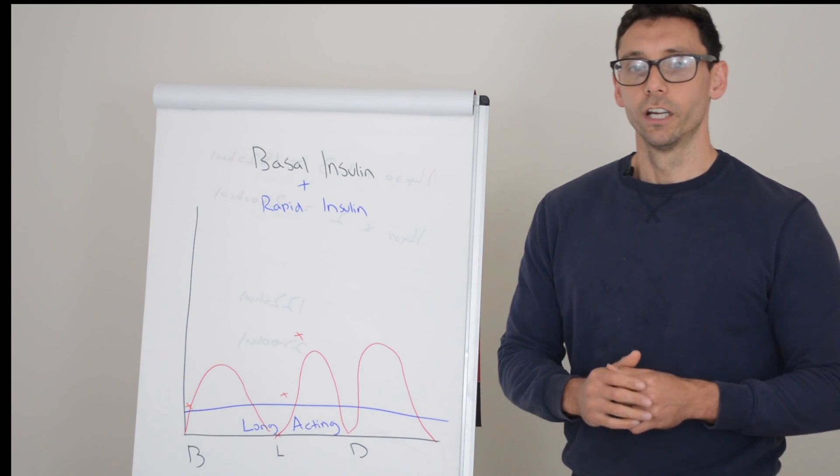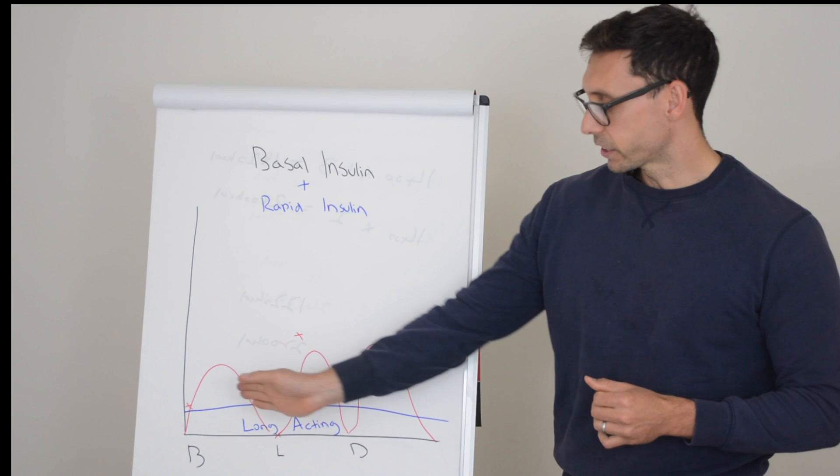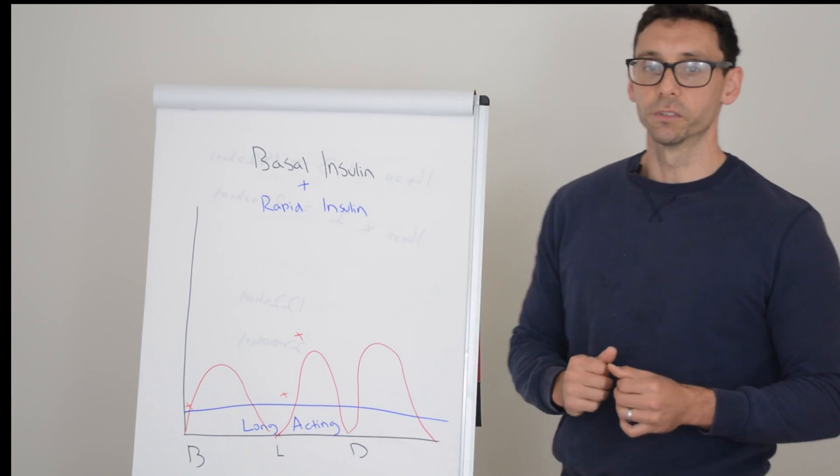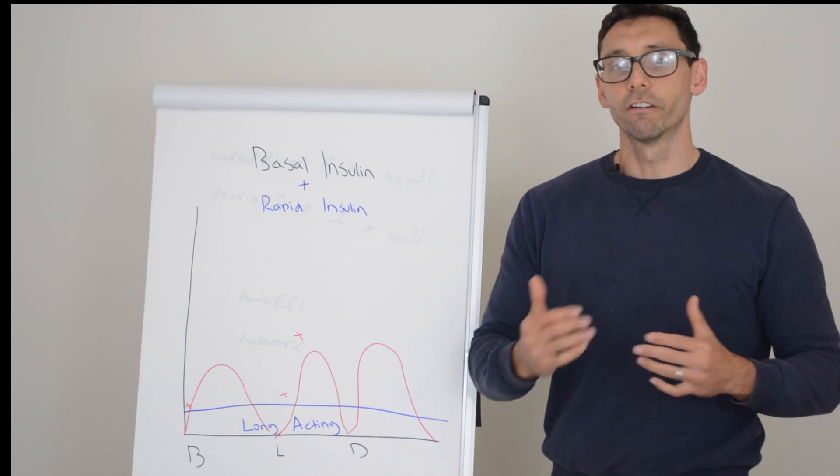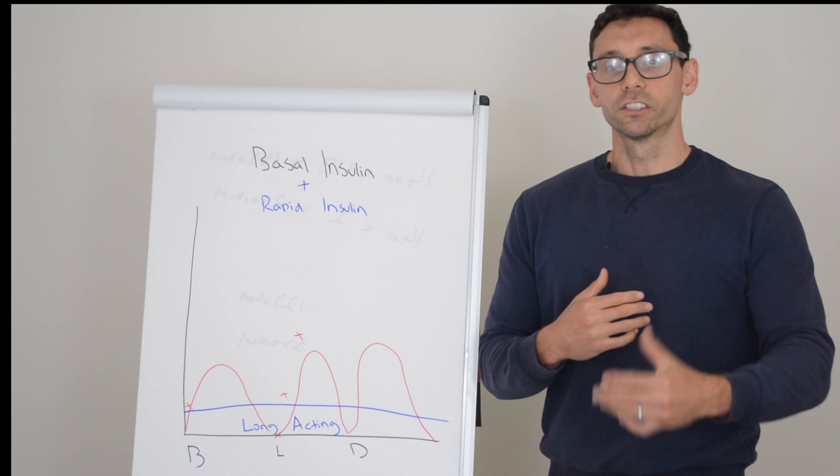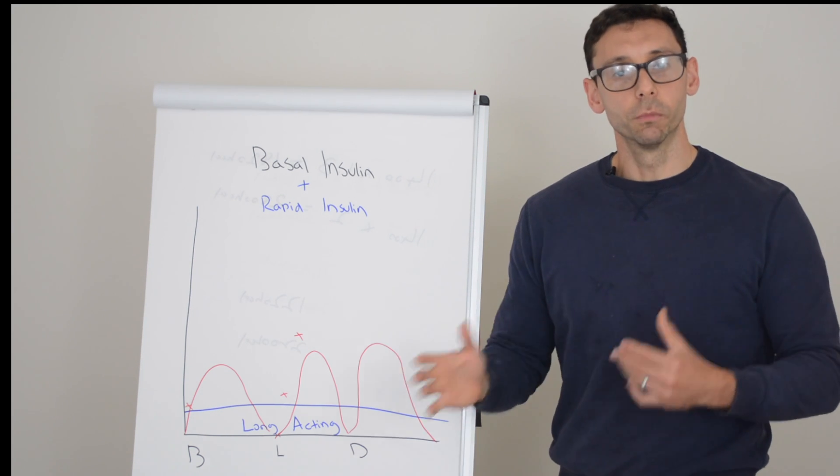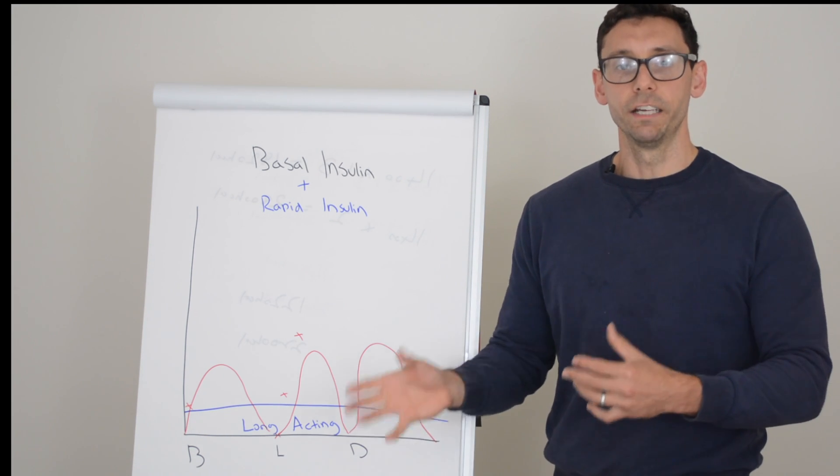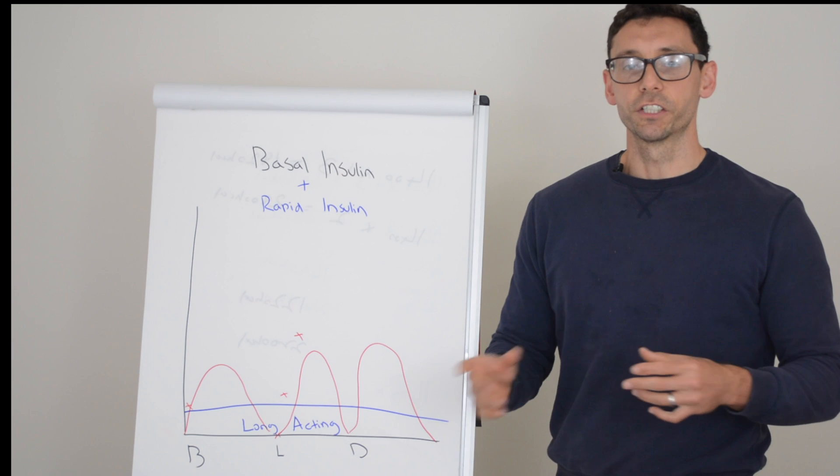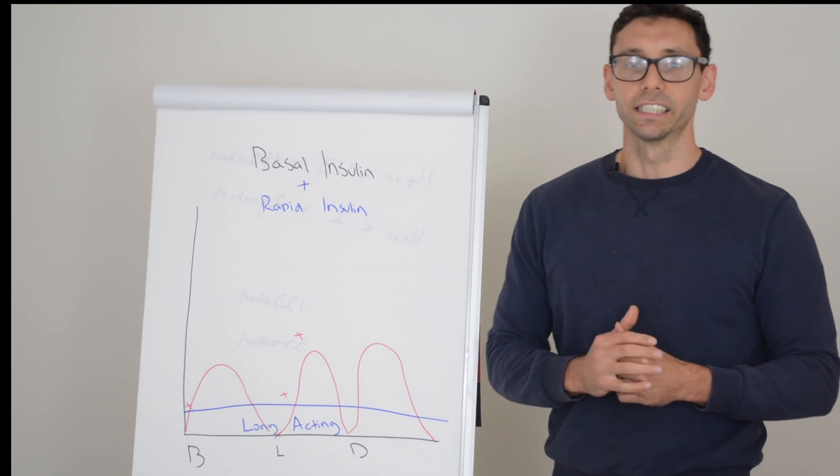Typically when you're newly diagnosed, you'll be given a set dose - for example five units three times a day - and you'll find you get variable glucose levels. Then as time passes you'll gain access to more education and more healthcare input, and you'll start to learn these strategies about how to adjust your rapid acting insulin.